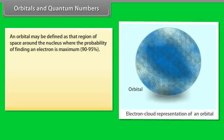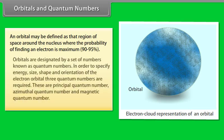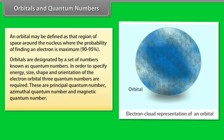An orbital may be defined as that region of space around the nucleus where the probability of finding an electron is maximum. Orbitals are designated by a set of numbers known as quantum numbers. In order to specify energy, size, shape, and orientation of the electron orbital, three quantum numbers are required: the Principal Quantum Number, Azimuthal Quantum Number, and Magnetic Quantum Number.